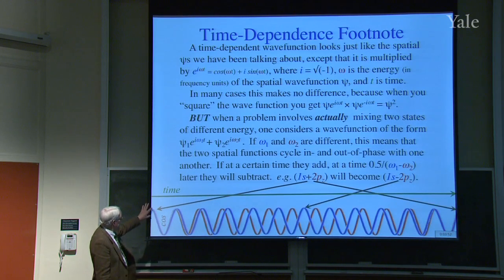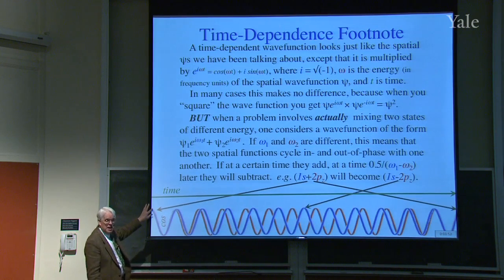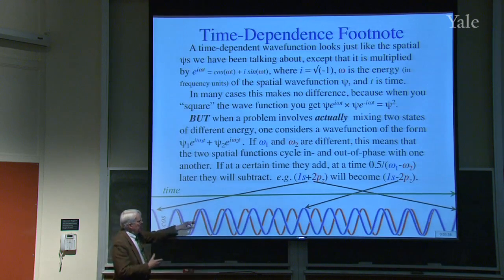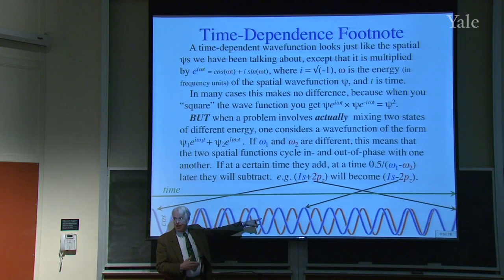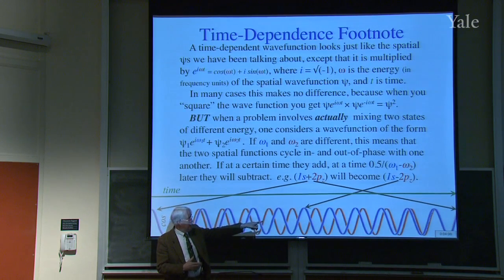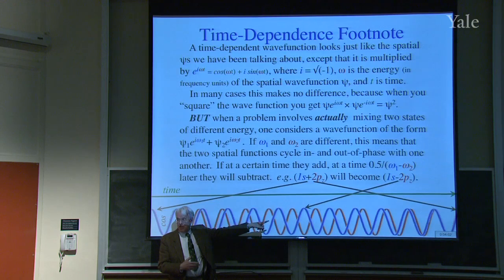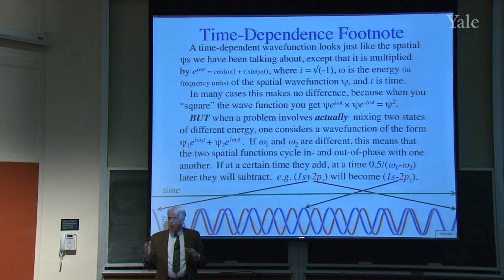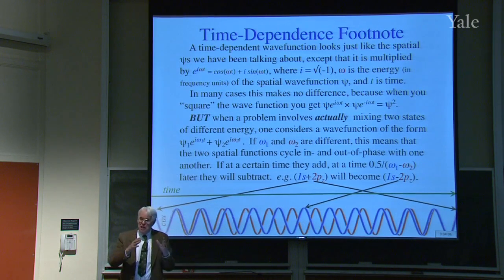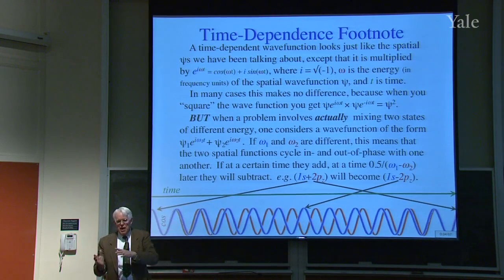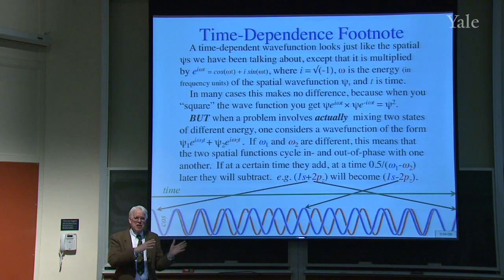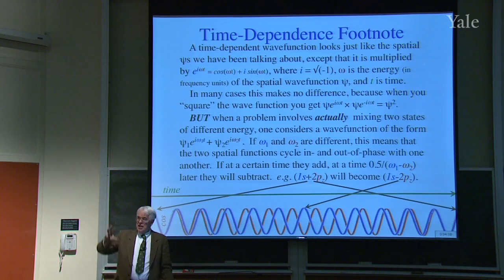The oscillation frequency of 2pz means 1s will have a lower oscillation frequency by that energy difference between them. So here the 1s and 2pz are in phase — the cosine parts are adding. In the middle of the time cycle they're out of phase and subtracting, then back in phase at the far right. As time goes along: s+p, s−p, s+p, s−p, and the electrons go up and down.